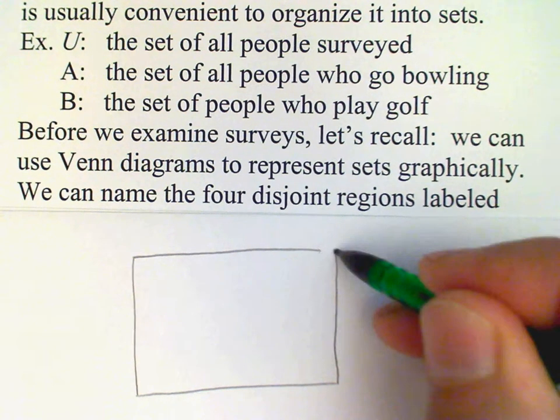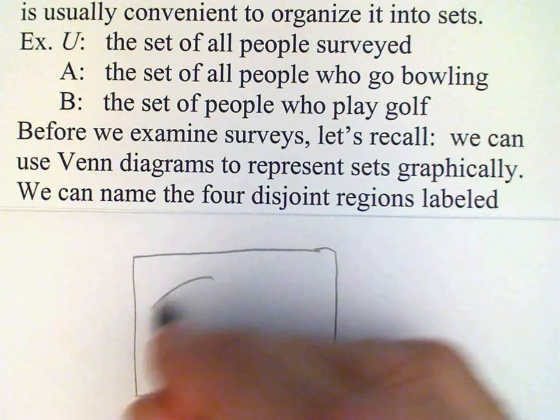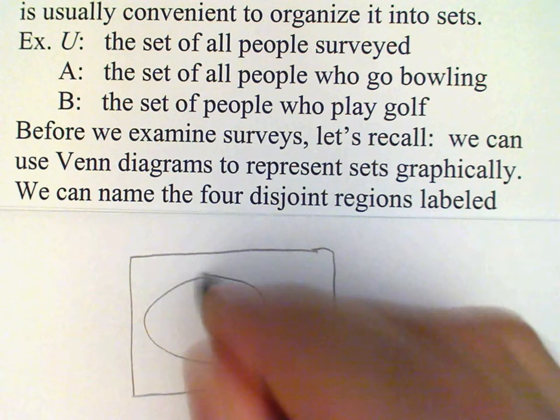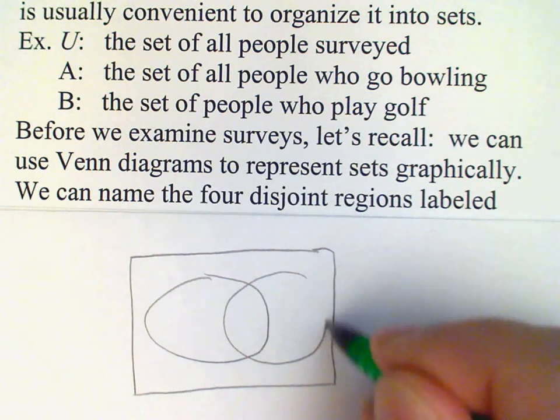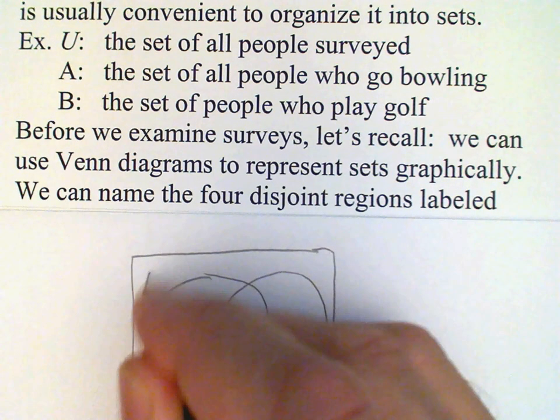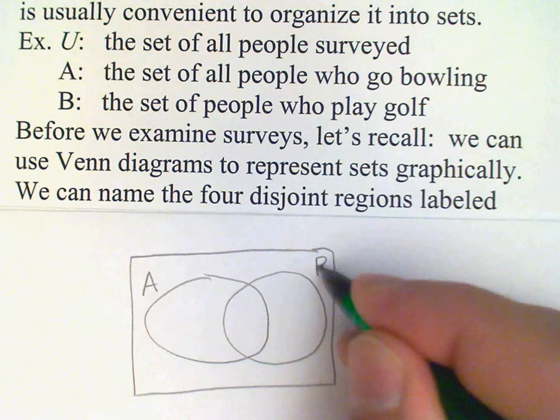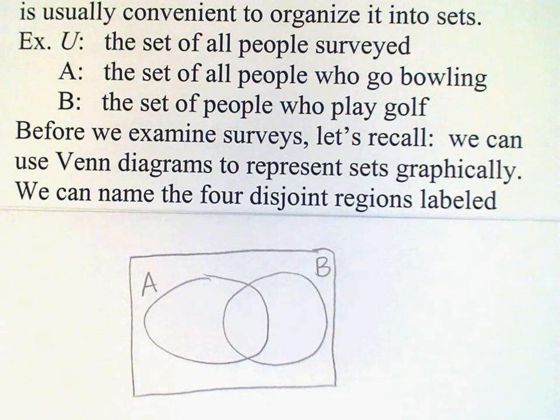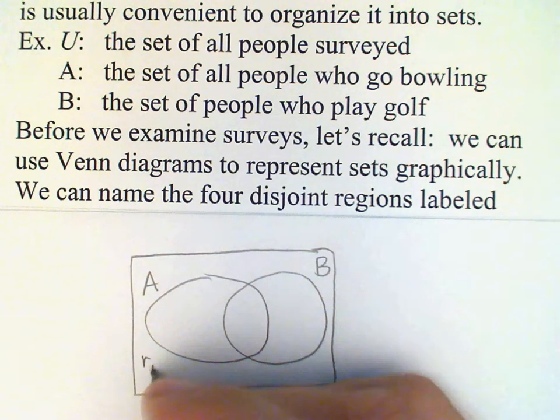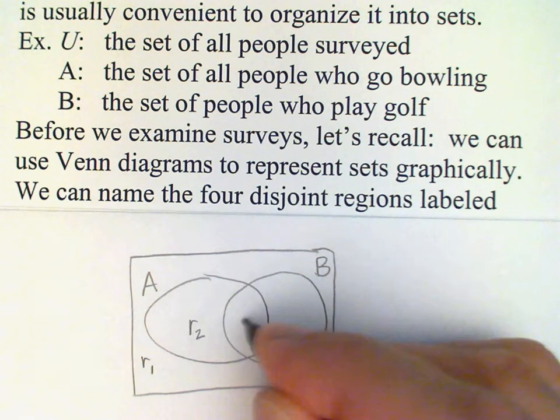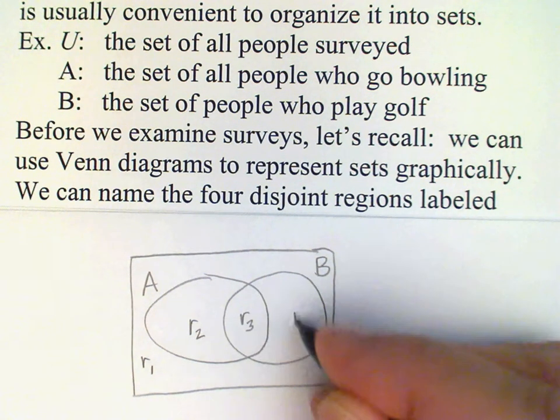Let's draw our rectangle and then our ovals representing set A and set B. We see we do have four disjoint regions in this diagram, which I can label r1, r2, r3, and r4.